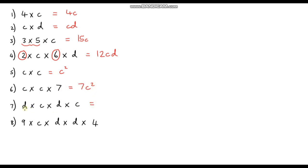Question 7: put the d's together — d times d is d squared. And c times c is c squared. So it's d squared times c squared, but remember we like to write things in alphabetical order, so we put the c's first: c squared d squared. And remember, we don't need the times symbol — c²d² implies c squared times d squared.